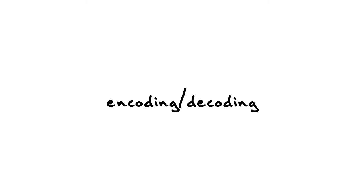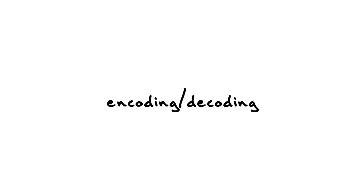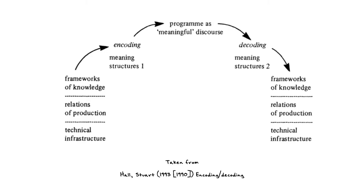Encoding Decoding by Stuart Hall. What I'm going to try to do is explain it as simply as I possibly can. Basically, encoding and decoding is a model of communication, and you can tell because there's a picture that illustrates it. So what kind of model of communication is this?